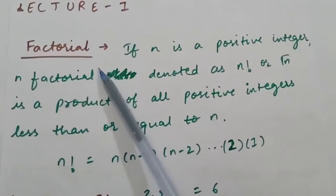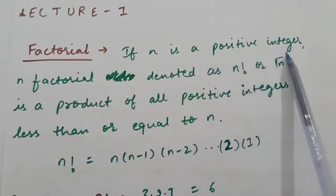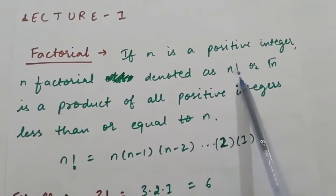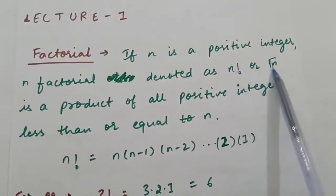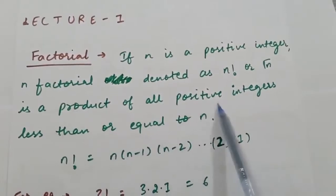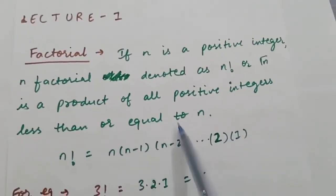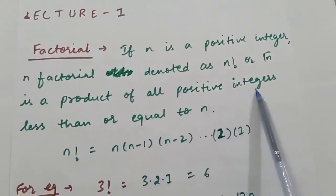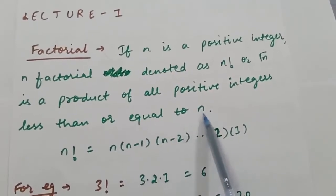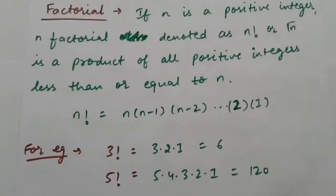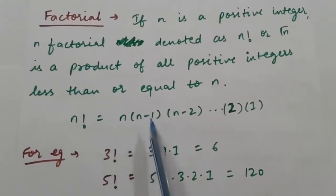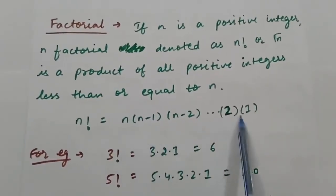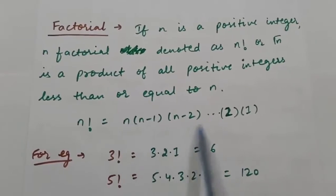So first is factorial. If n is a positive integer, n factorial, denoted as n! (this is the symbol for factorial), is a product of all positive integers less than or equal to n. So n factorial is denoted as n × (n−1) × (n−2) × ... × 1.